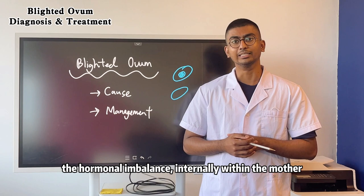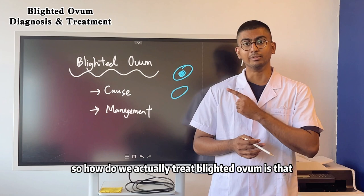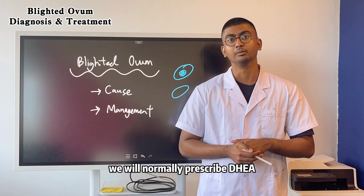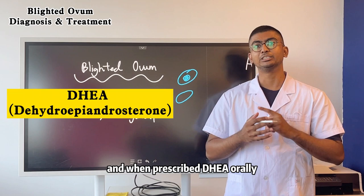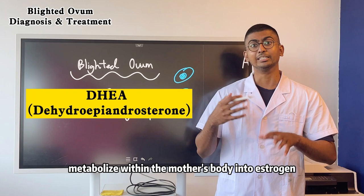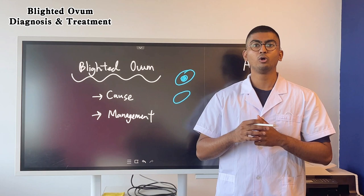For patients who have a history of blighted ovum, we normally prescribe DHEA, a common medication. When DHEA is taken orally, it can metabolize within the mother's body into estrogen, thus bringing up estrogen levels, and many of these patients do go on to develop full-term healthy pregnancies.